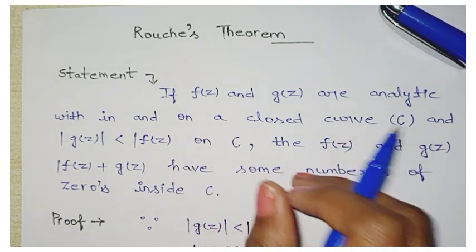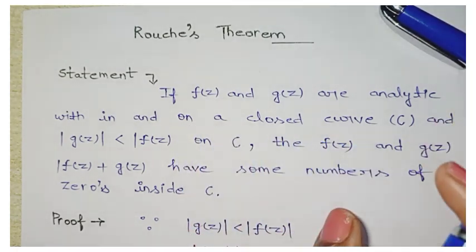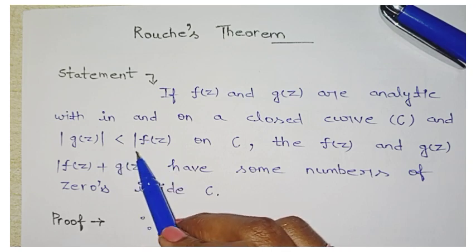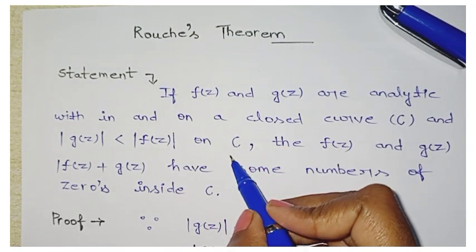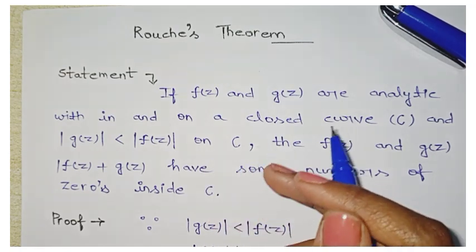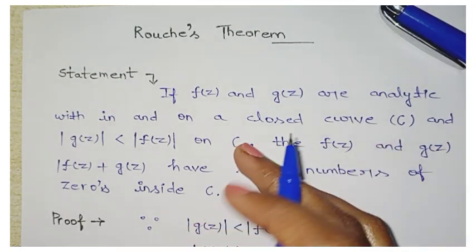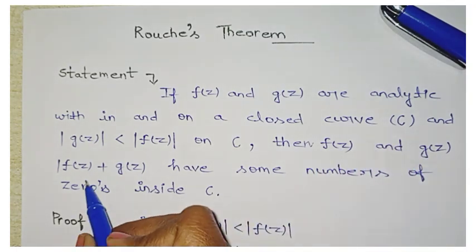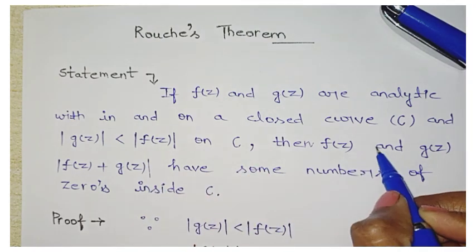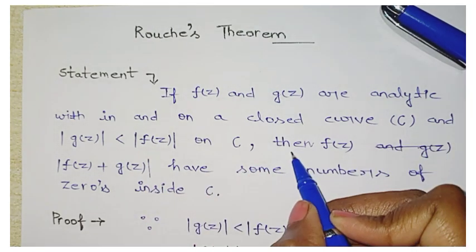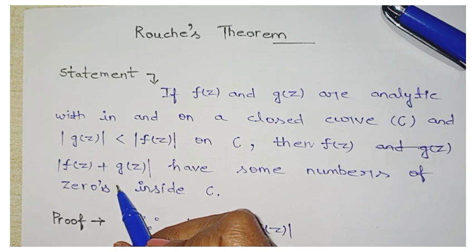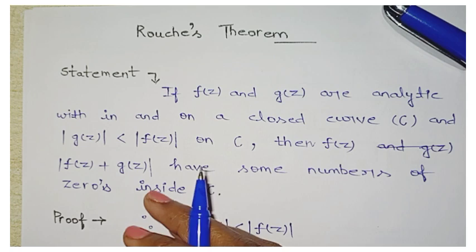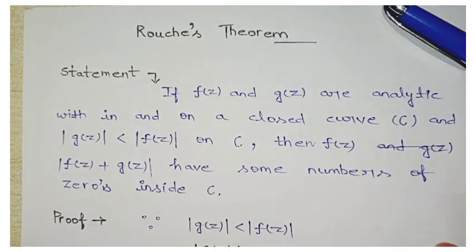Within and on closed curve C, f(z) and g(z) are analytic, and mod of g(z) is less than mod of f(z) on C — at each point of C. Then f(z) and f(z) + g(z) have the same number of zeros inside C. That is the statement.